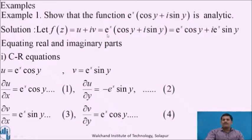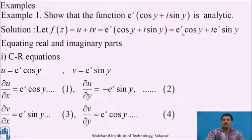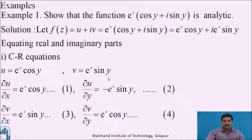Multiplying through by the exponential, we get the function as e raised to x into cos y plus i times e raised to x into sin y. Both sides are complex expressions, so equating real and imaginary parts, we get u = e^x cos y and v = e^x sin y.